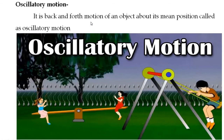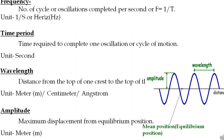Sixth, oscillatory motion: it is the back-and-forth motion of an object about its mean position. Examples shown are a pendulum moving back and forth, and a swing that also moves about its mean position in a back-and-forth manner.